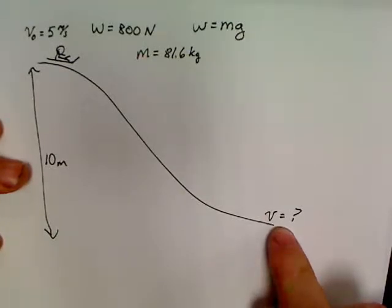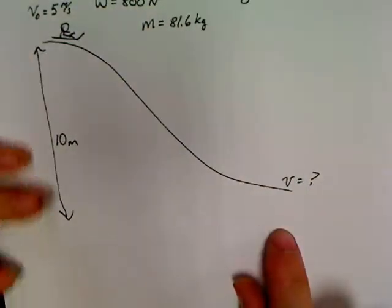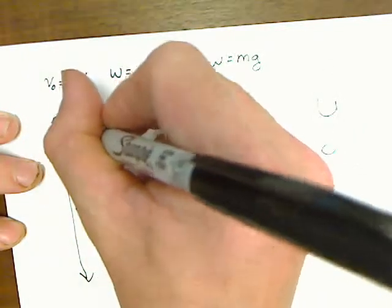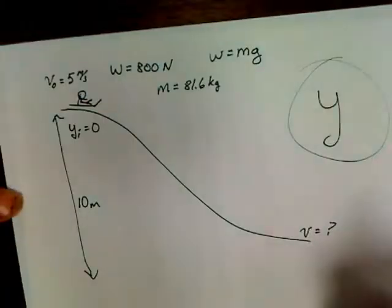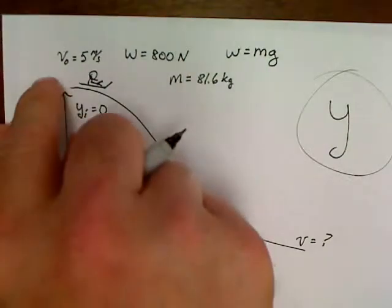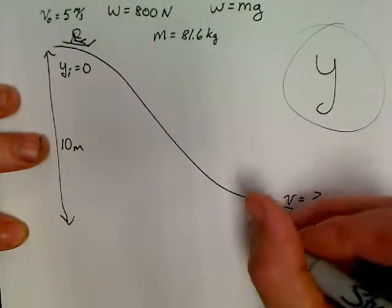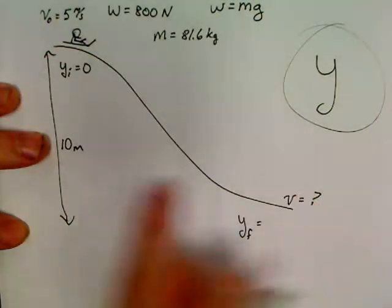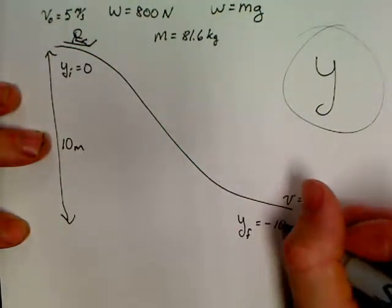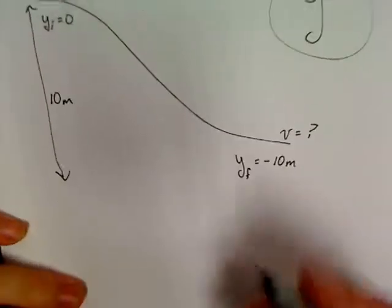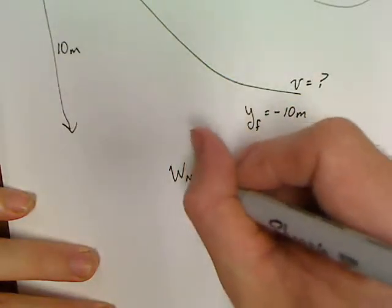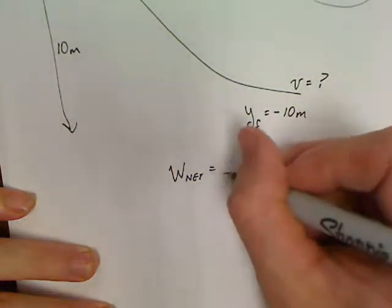And what the problem wants to know is what is the velocity at the bottom of the hill? Well, even though this problem may look harder, it's not harder. Before I even write my first equation, I want to take care of my whys. I'm going to call this point up here my Y initial. And I always, it's just me, I always call Y initial 0. Which means, go down this hill, what is my Y final? Well, he fell 10 meters. So Y final is negative 10 meters. Okay, well, we've kind of got that taken care of now. All right, so let's just go to this. Work net.